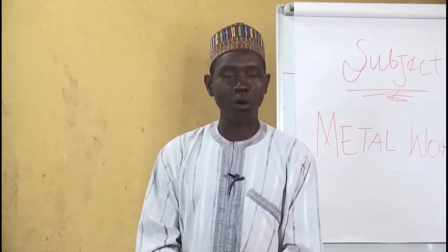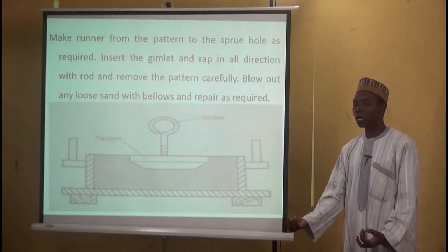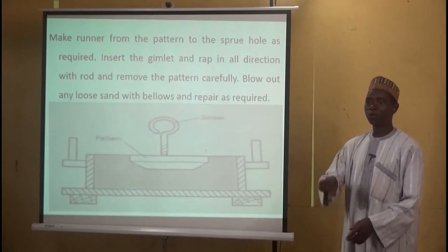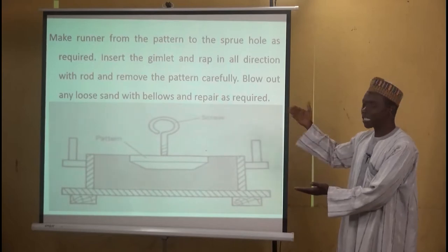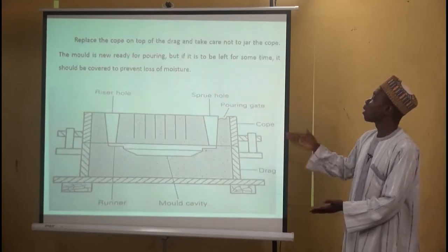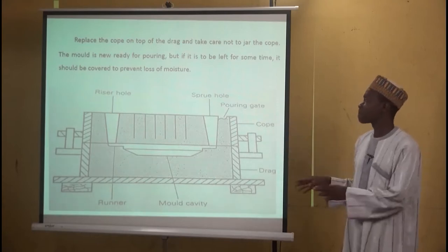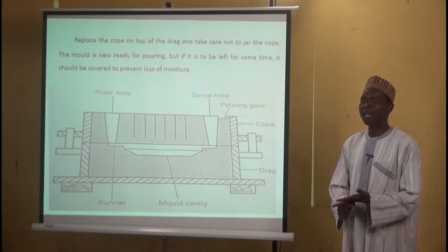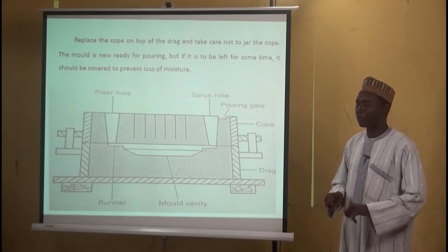To remove the pattern, you screw a gimlet inside the pattern. When the gimlet is fixed, you use a rod to tap top, bottom, and sideways — making the pattern a little loose from the sand in the mold. Then you quickly withdraw it out. When withdrawn, it leaves a cavity — the impression of the pattern you want to produce — left empty inside. If there are any particles or dust inside, you use a bellows to blow them out. If the cavity requires repairs, you carry them out. Then you bring the cope and assemble the mold together.